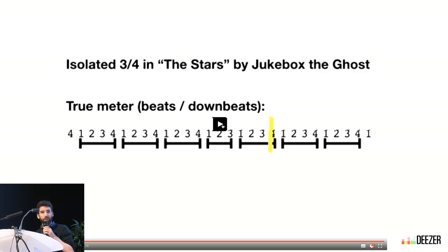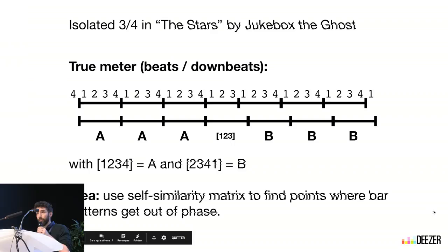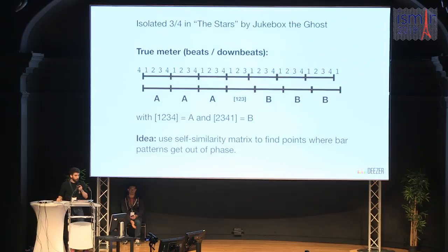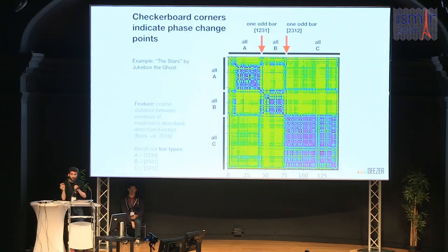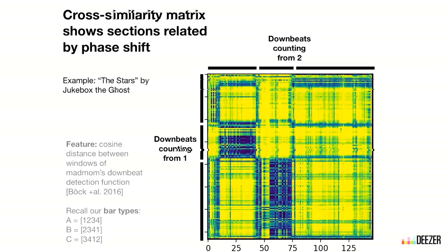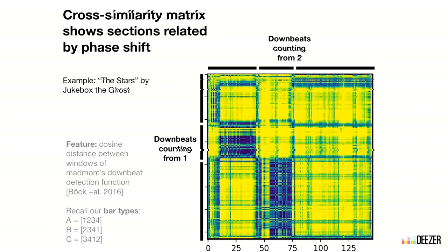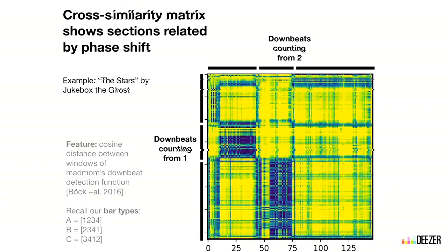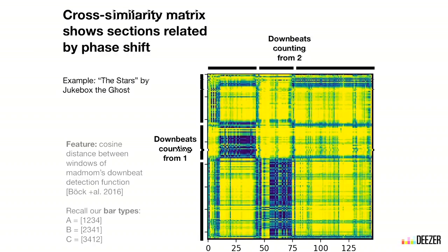If you make a constant downbeat assumption for a song with meter changes, bar estimations get out of phase. Our method was based on using a self-similarity matrix to find points where the bar patterns get out of phase. By comparing the downbeat detection function for all bars using the constant downbeat assumption, you'll find these phase changes as corners in the self-similarity matrix. You can also find sections related to each other with a phase change.